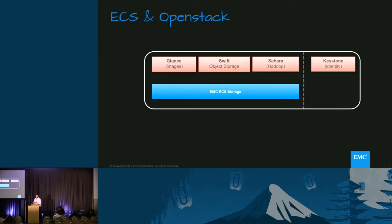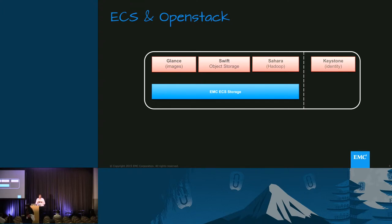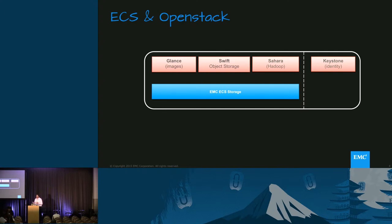When you look at OpenStack, we have Swift storage — that's the object storage. Glance, of course, uses Swift. And we have Sahara for Hadoop. So ECS can really serve as your replacement for Swift storage. It comes with Keystone identity support, and it also supports Active Directory and LDAP as well.